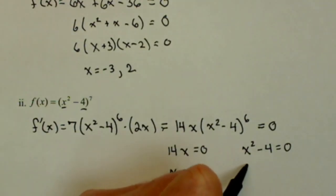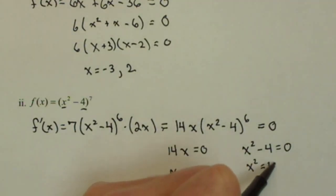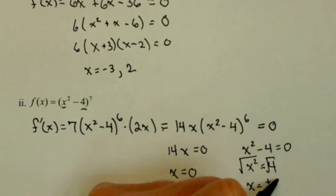This one, when we go to solve, we add 4 to both sides. We get x² = 4. Square root both sides. We're going to get x equals plus and minus 2. So we find that we have three critical points for this second one.